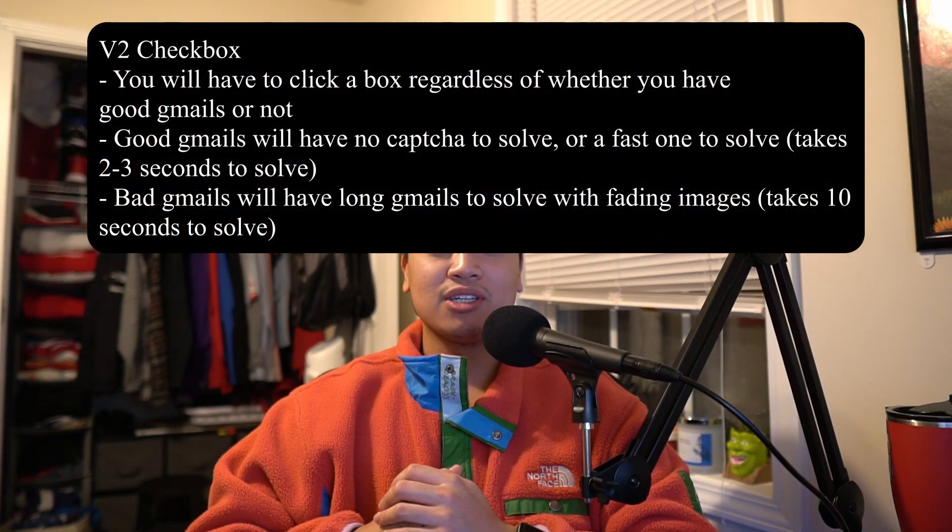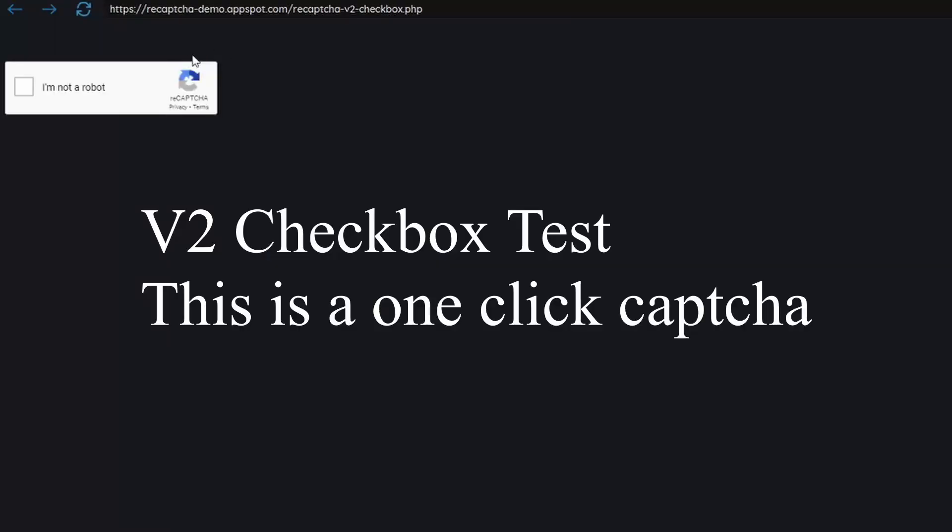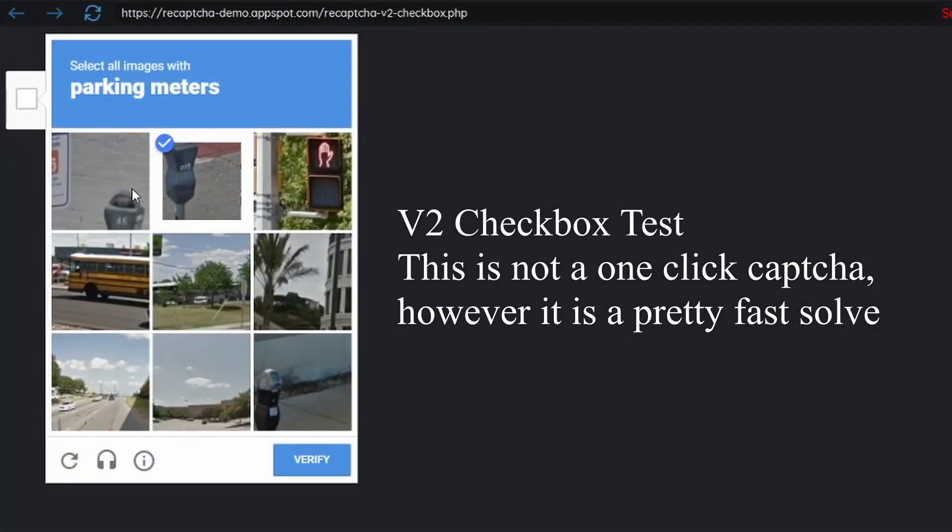The next type is the v2 checkbox. This is similar to the invisible captcha but regardless of whether or not you have a good gmail account you still have to click the checkbox. If you have a one-click gmail account you won't have to solve any captcha — it'll just give you the green checkmark animation and you can proceed to checkout. However, if you don't have that one click it's going to give you a captcha to solve, and depending on how good your gmail is it might be a two to three second solve or it might be a 20 to 30 second solve with super slow fading images. Those seconds matter on a super hype release. Sites that use this include PlayStation Direct's queue system and Shopify sites.